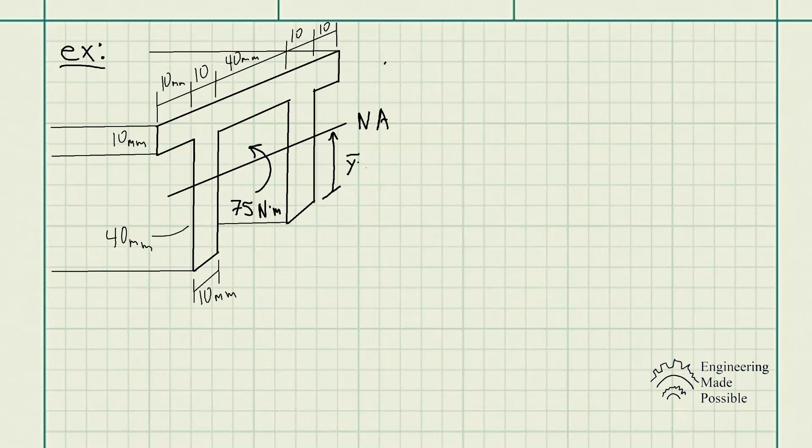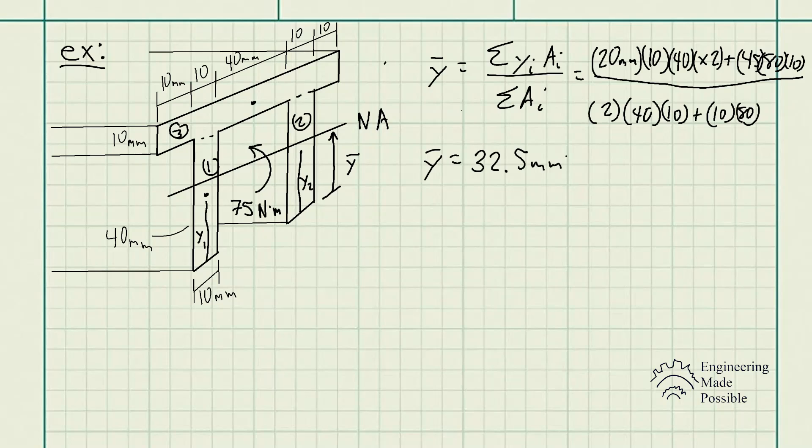From the bottom, Y bar is this value. For finding centroids of composite areas such as this one, I'll go ahead and link the video that I previously uploaded on how to solve. Without going too far into it, we actually end up solving for Y bar being equal to 32.5 millimeters from the bottom here. This is where the location of the neutral axis is located.